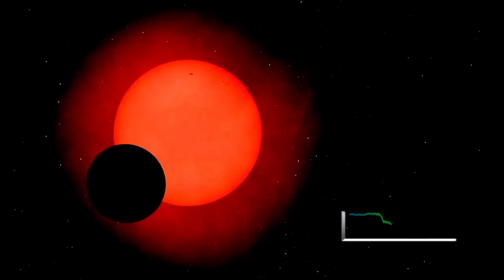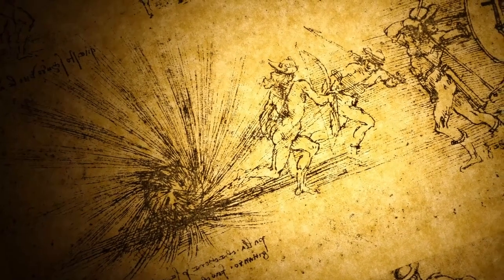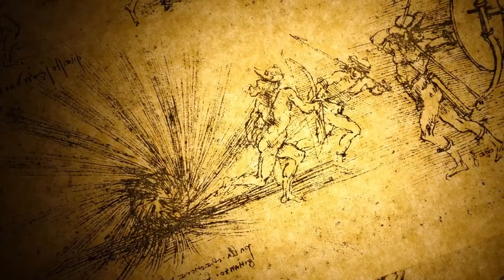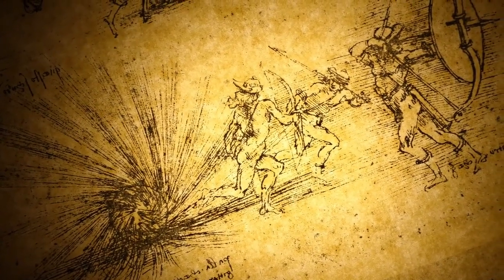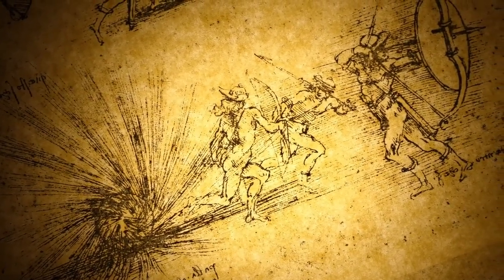This brings us to a critical question: When will Betelgeuse explode as a supernova? Estimates vary widely. Some astronomers suggest that the star could go supernova within a few decades, while others propose that it may still have up to 100,000 years left.